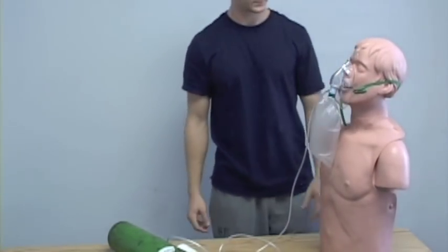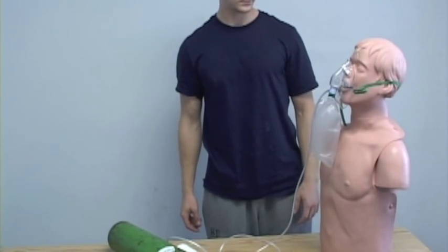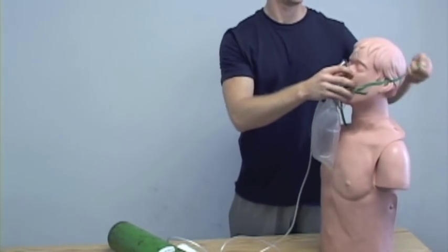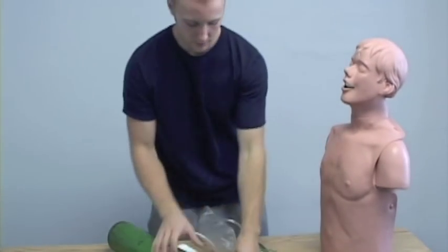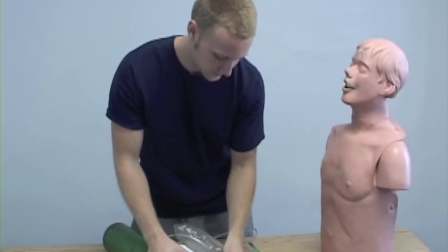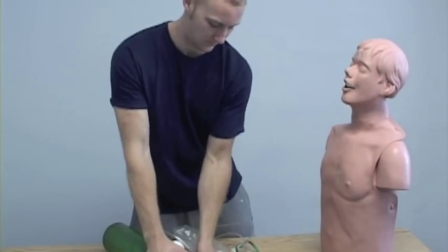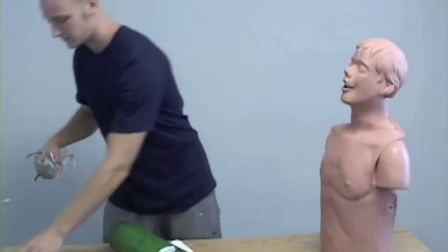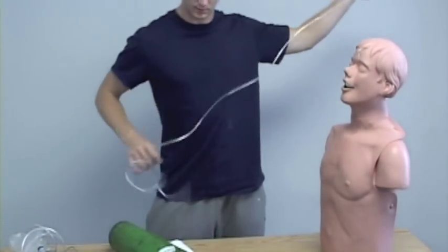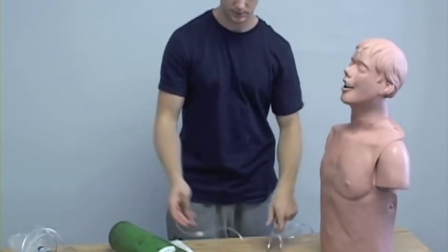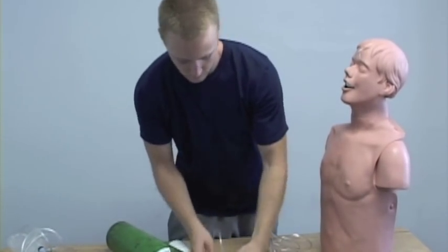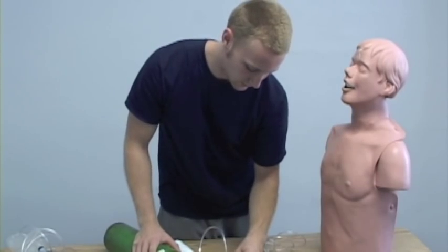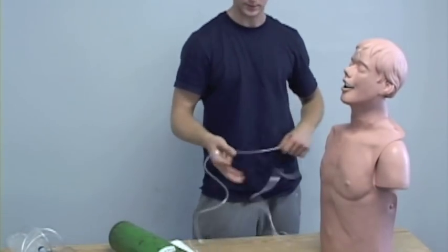The patient is not tolerating the non-rebreather mask. Apply nasal cannula to the patient. Remove it. Turn on the air. Remove the non-rebreather mask. Attach the nasal cannula. Set to 4, anywhere under 6 liters per minute.